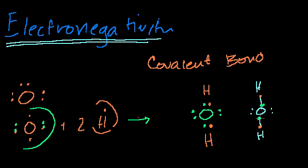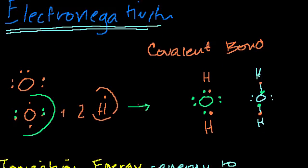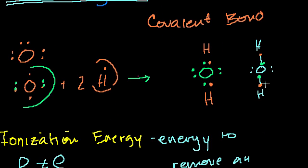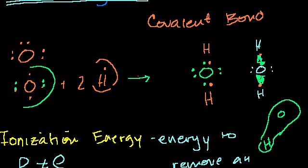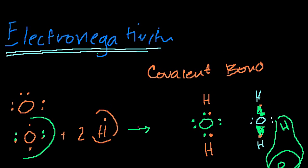Electronegativity means oxygen kind of hogs the electrons more. If you were to draw this bond, the electrons spend most of their time around the oxygen — that's a probability distribution — and less of their time around hydrogen. That would be true for the other hydrogen as well. The idea of electronegativity is just that one atom is going to hog the electrons more when you form a covalent bond.